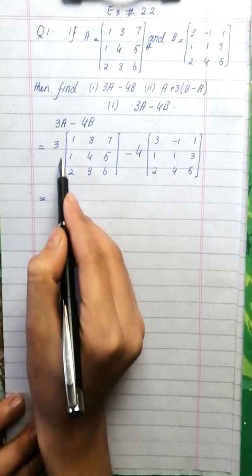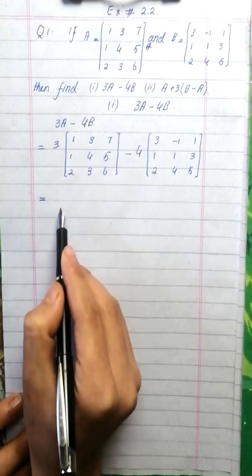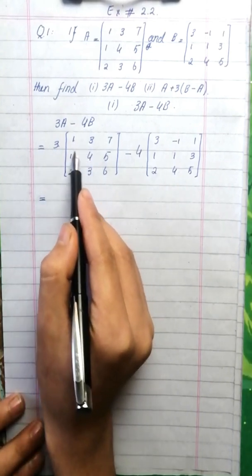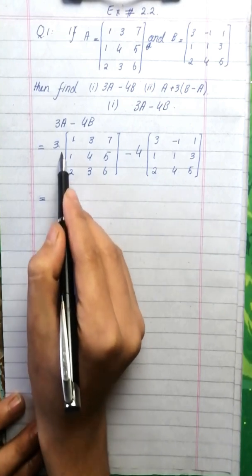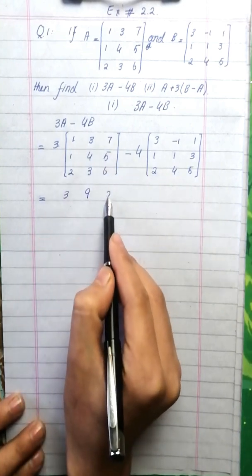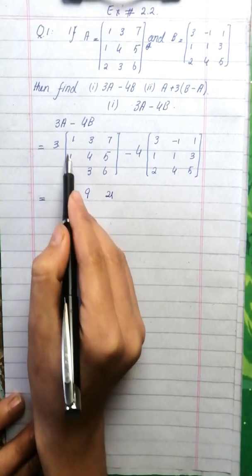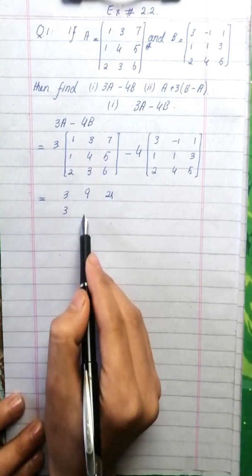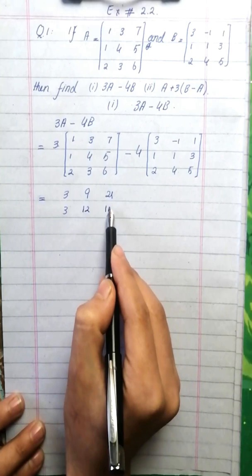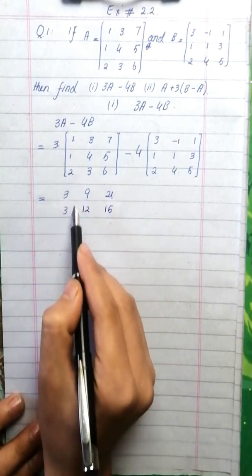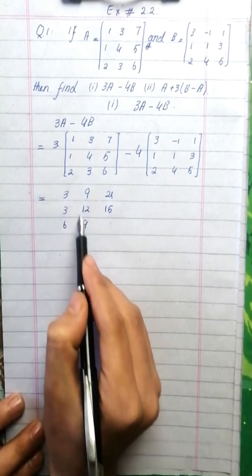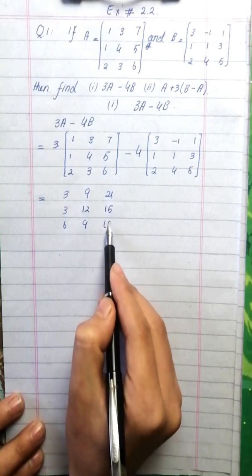3A mein hum 3 ko sabhi elements ke saath multiply karenge: 3 into 1 = 3, 3 into 3 = 9, 3 into 7 = 21, 3 into 1 = 3, 3 into 4 = 12, 3 into 5 = 15, 3 into 2 = 6, 3 into 3 = 9, 3 into 6 = 18.